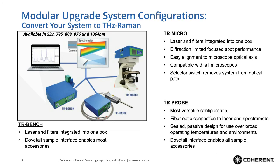The TR Probe is the most versatile configuration, where the filter head is actually separated from the laser box to fit into more compact spaces. The probe head is completely passive in design with no electrical connections, for use in a broad range of operating temperatures and environments, and has the same dovetail flange as the TR Bench. The TR Probe has the most sample accessory options, making it the workhorse of the product line.